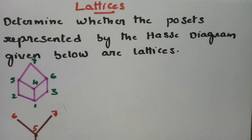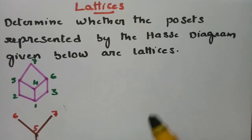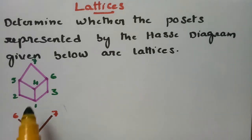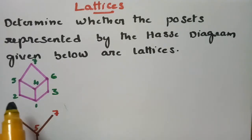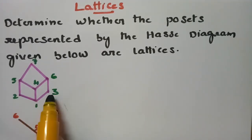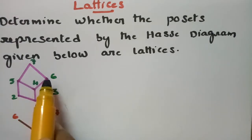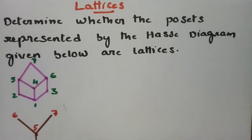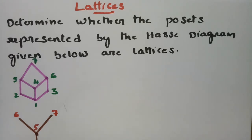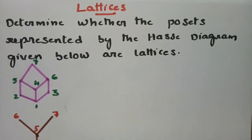In today's video I am going to discuss a few problems where we have to determine whether the posets represented by the Hasse diagrams given below are lattices. This is related to discrete mathematics. Looking at the first Hasse diagram, the elements here are 1, 2, 3, 4, 5, 6, and 7. If we consider any pair of elements, it should have a greatest lower bound and a least upper bound.